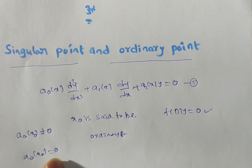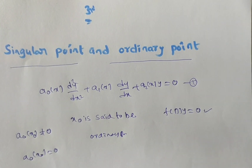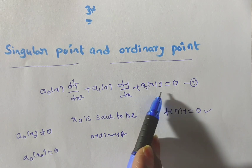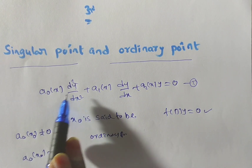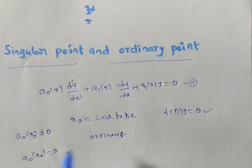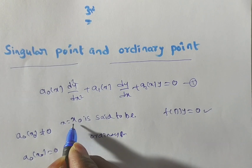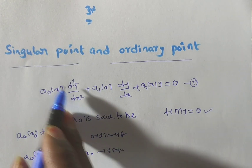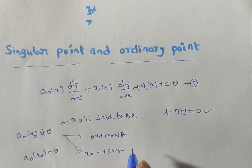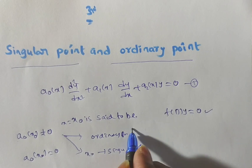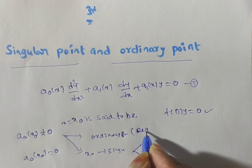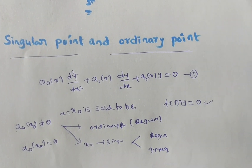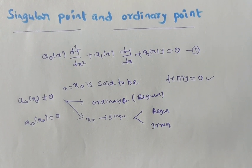If a₀(x₀) equals 0, then x₀ is said to be a singular point. So, ordinary point has another name — regular point. But singular points have two types: regular singular point and irregular singular point. In this video we will discuss regular singular point and irregular singular point as well.